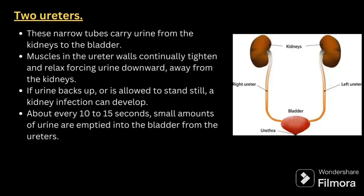The ureters are narrow tubes carrying urine from the kidneys to the bladder. Muscles in the ureter wall continually tighten and relax, forcing urine downward away from the kidneys. If urine backs up or is allowed to stand still, a kidney infection can develop. About every 10 to 15 seconds, small amounts of urine are emptied into the bladder from the ureters.